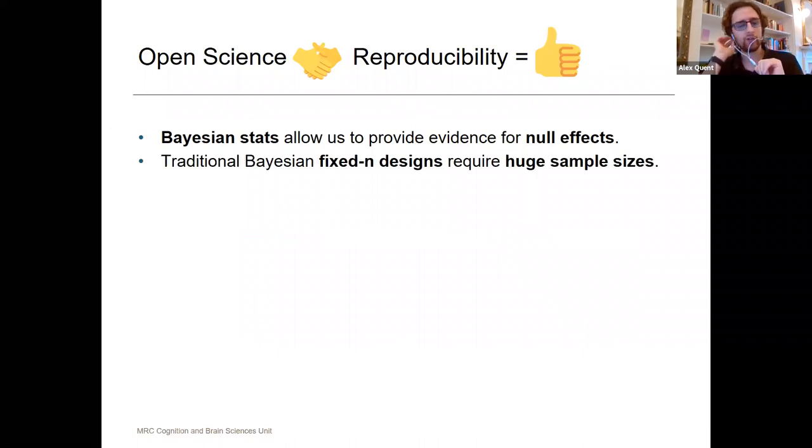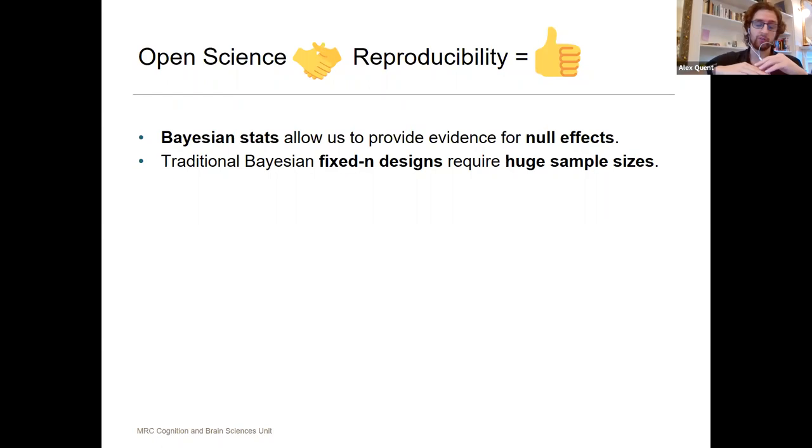However, if we try to do this with fixed-n designs where you pre-register or do registered reports and you determine the sample size where you have 80% probability to get a certain effect, the sample sizes are really huge.